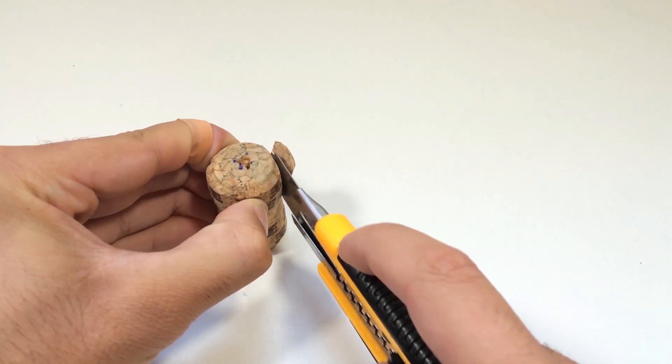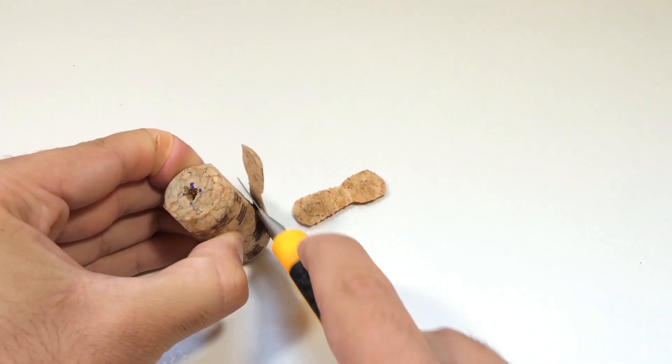Then slice two flat sides on the cork. This makes the coil more stable and helps it spin evenly.